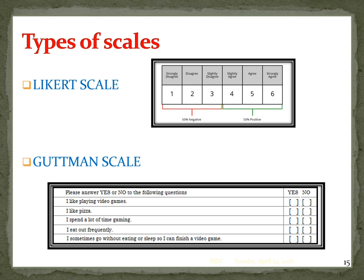In the Likert scale, either increasing or decreasing ranking is given. In the Guttman scale, respondents share answers of yes or no to a series of statements.